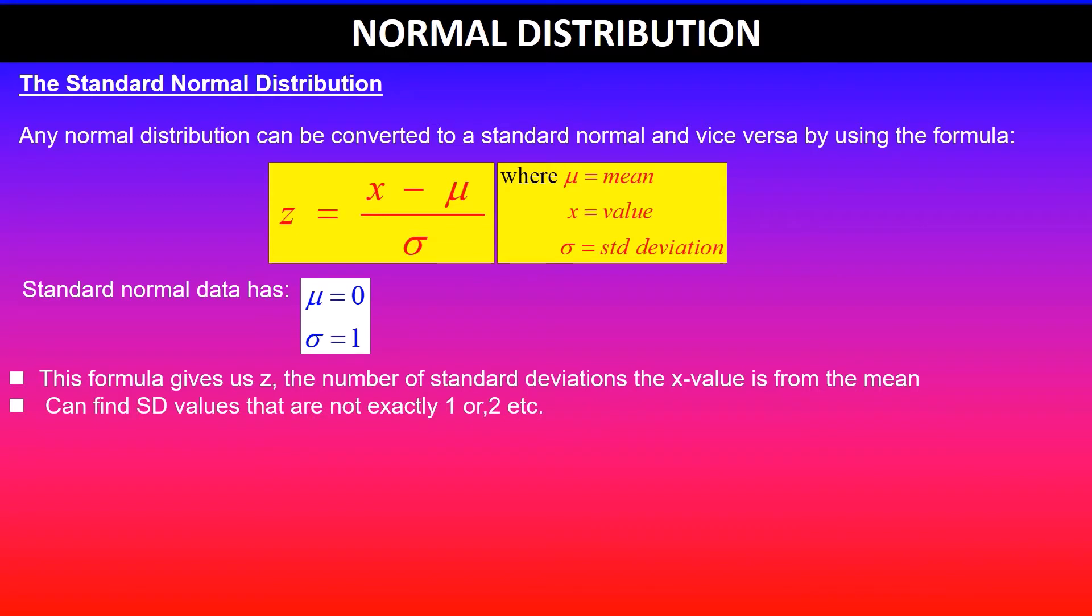And we can use this to find the standard deviation values that are not exactly 1, 2, etc. You will need the z value if you are using the standard normal tables to find the probabilities.